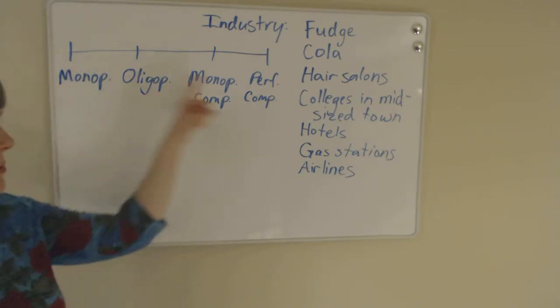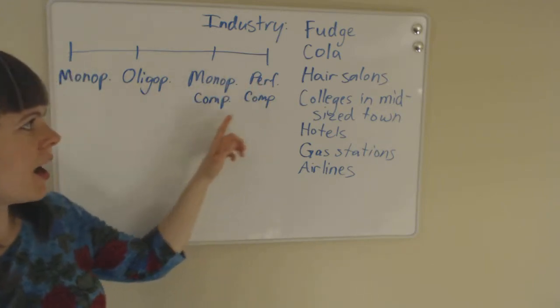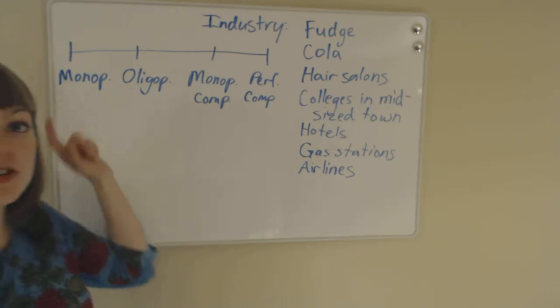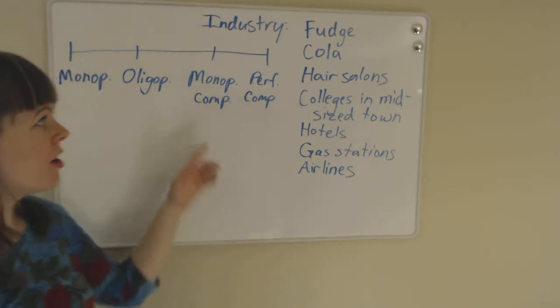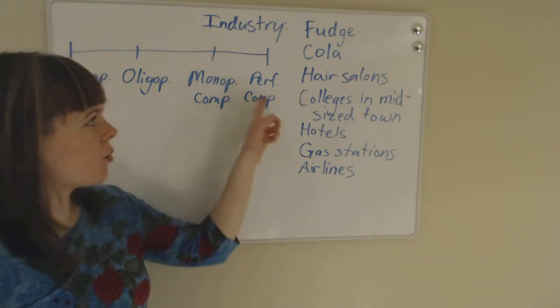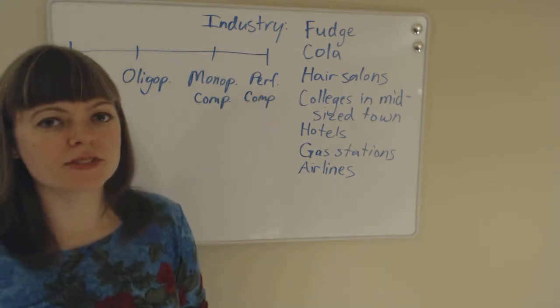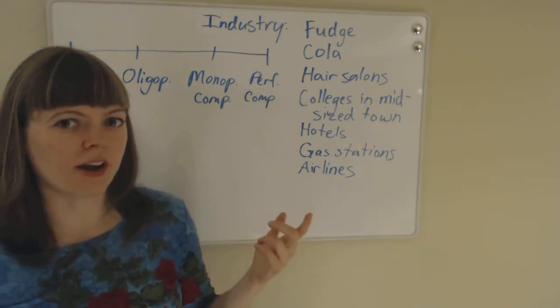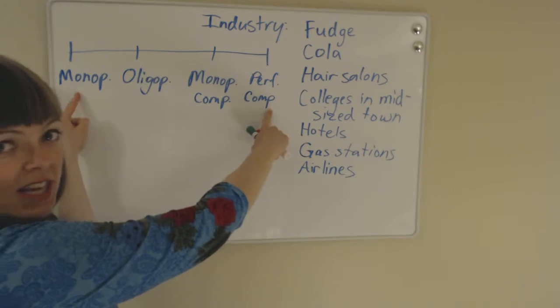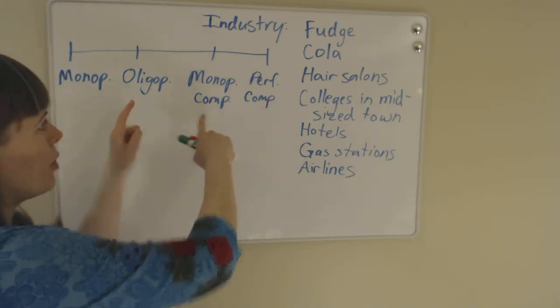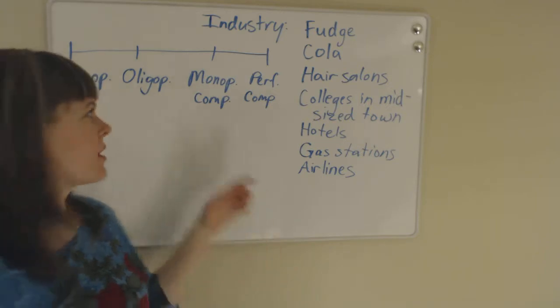I've put up this spectrum to remind us that industries lie somewhere on the spectrum from monopoly, where there's one firm with lots of power, to perfect competition, which is what we've studied all semester long, where there's lots of firms and there's free entry and exit, and they all create identical products. And we've talked about how these are the most theoretical of the different industry types.